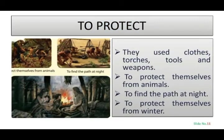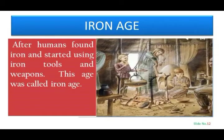To protect themselves, early humans used clothes, torches, tools, and weapons — to protect from animals, to find their path at night, and to protect themselves from winter. After humans found iron and started using iron tools and weapons, this age was called the Iron Age.